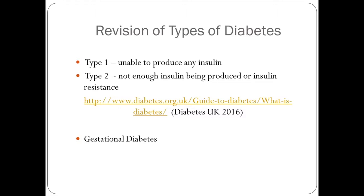In type 2 diabetes, not enough insulin is being produced by the pancreas, or the body cells aren't responding to insulin in the same way — this is called insulin resistance. It usually occurs in those aged 40 or above, and 85% of patients with diabetes usually have type 2. A link on the slide takes you to a useful animated film on the Diabetes UK website that talks through the signs and symptoms. We're now going to explore gestational diabetes in more detail.